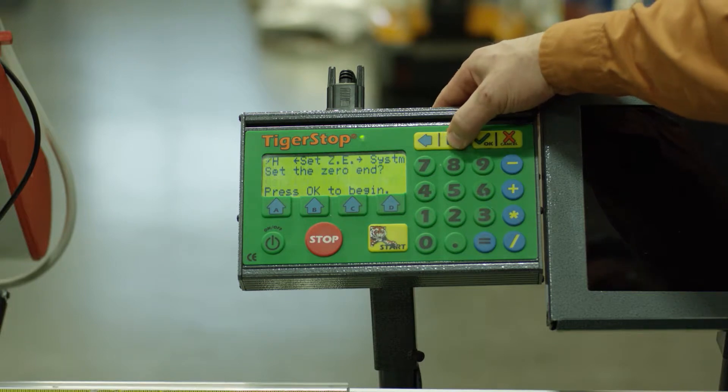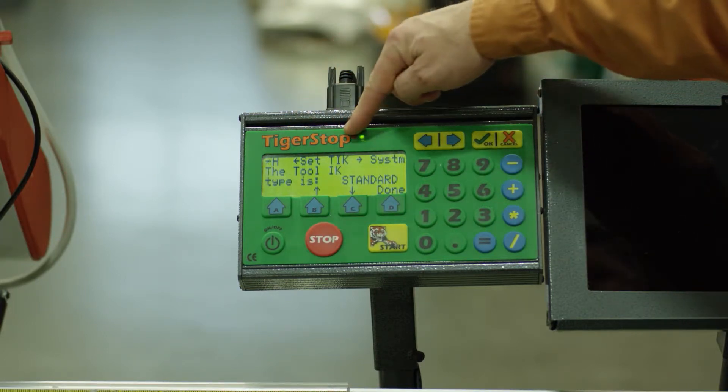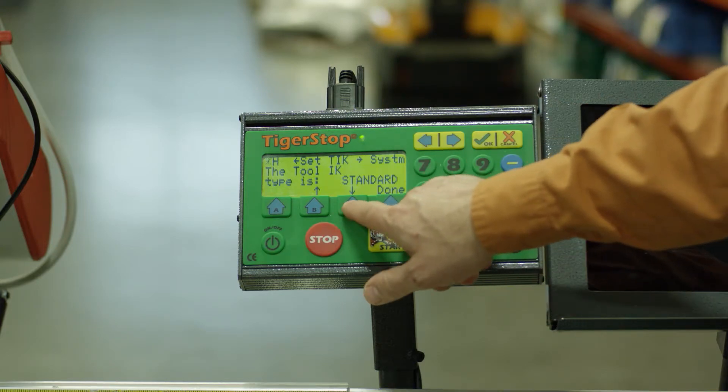We'll press the right arrow until we see the set the TIK. You can see that's set to standard currently. We're going to change that to none.